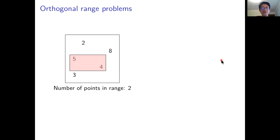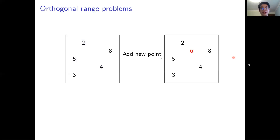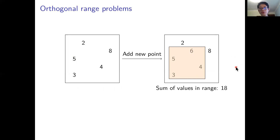For instance, if we query this range, we might ask for the number of points in that range, which is 2, or the maximum value in the range, which is 5. We also consider dynamic versions of this problem, where points can be added or removed. If we add a point — say the 6 here — the maximum in this range is 8 and the sum in this range is 18.